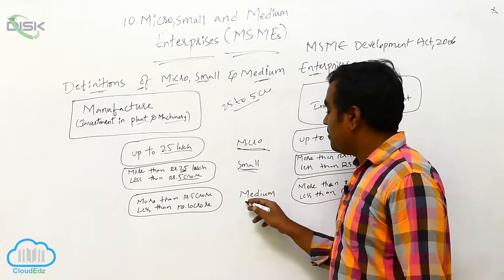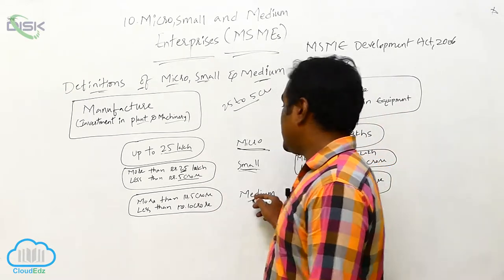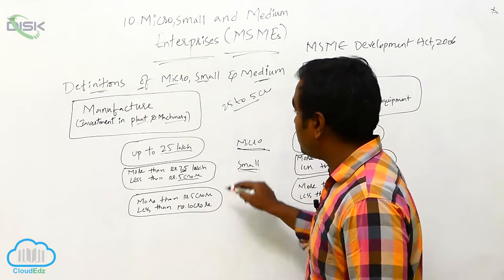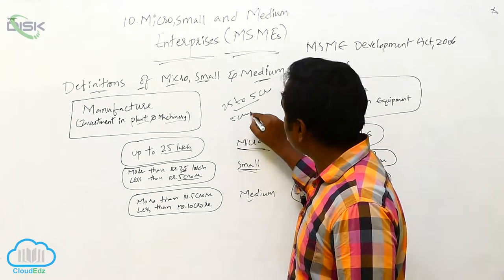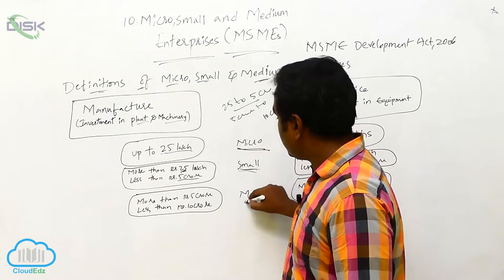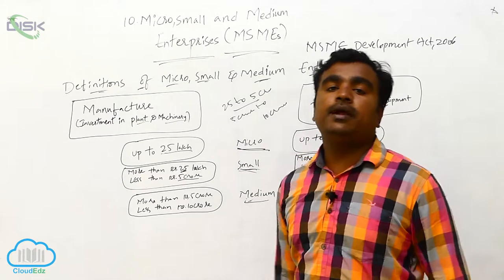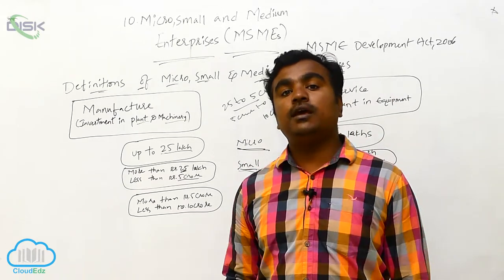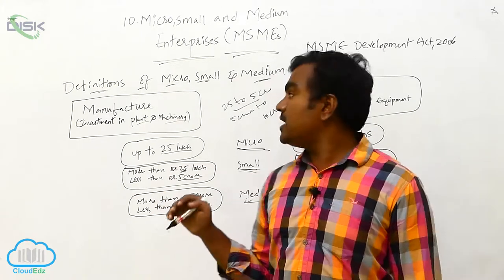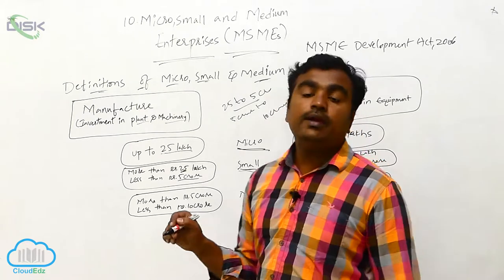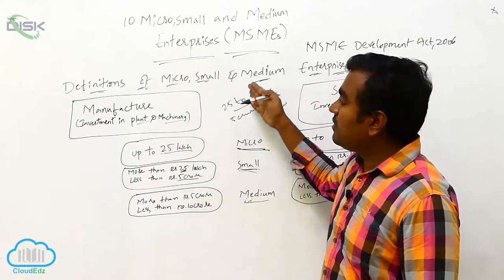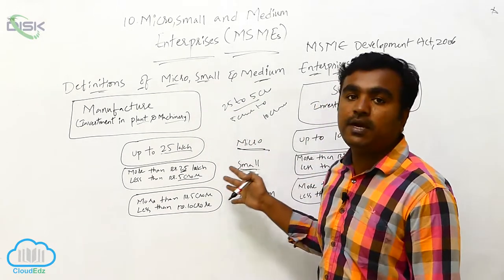Medium manufacturing enterprises are those where the investment in plant and machinery is more than 5 crores and up to 10 crores. If the investment is between 5 crores and 10 crores, it is regarded as a medium enterprise.